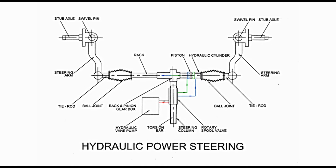Torsion bar is a thin rod of metal. One end of torsion bar is connected with steering wheel; that end is not shown in diagram. As steering wheel is turned, due to torque, torsion bar is twisted. Twisting of bar depends upon torque applied, and torque applied depends upon turning of steering wheel. Therefore, torsion bar is twisted as per turning of steering wheel. This activates rotary spool valve.